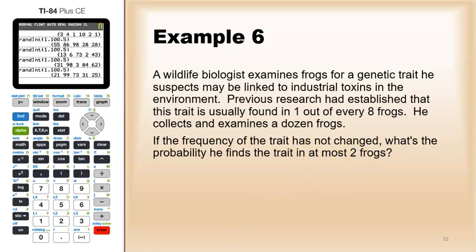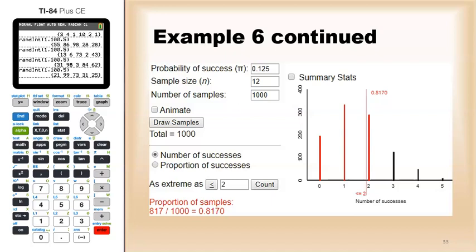So in Rossman Chance I would set the probability of success to 0.125, that's one-eighth. The sample size would be the 12 frogs, and do at least a thousand simulations for number of samples. So it'd be at least a thousand.